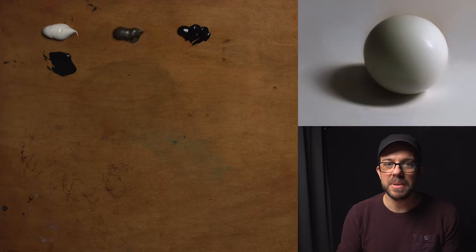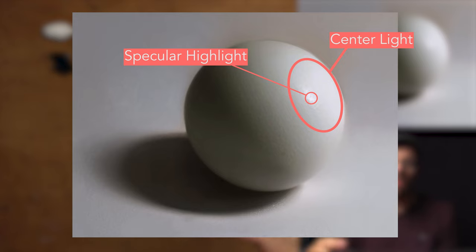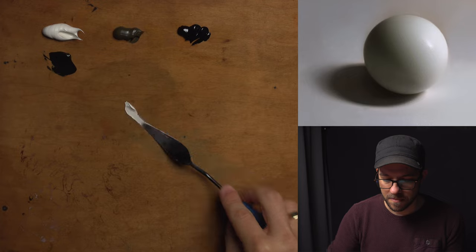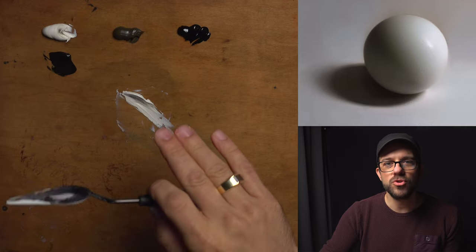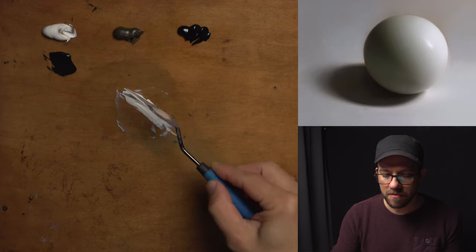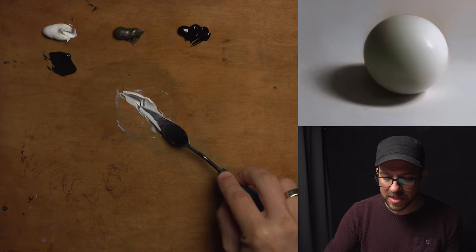The next thing I'm going to do is actually mix up my lightest light. Now this is not going to be the light for the specular highlight that you see on the sphere. This is going to be for the overall body of light in the central light area of the sphere. In order to drop that value down a little bit, I'm just going to take a whisper of my raw umber and maybe just a tiny bit of ivory black as well.